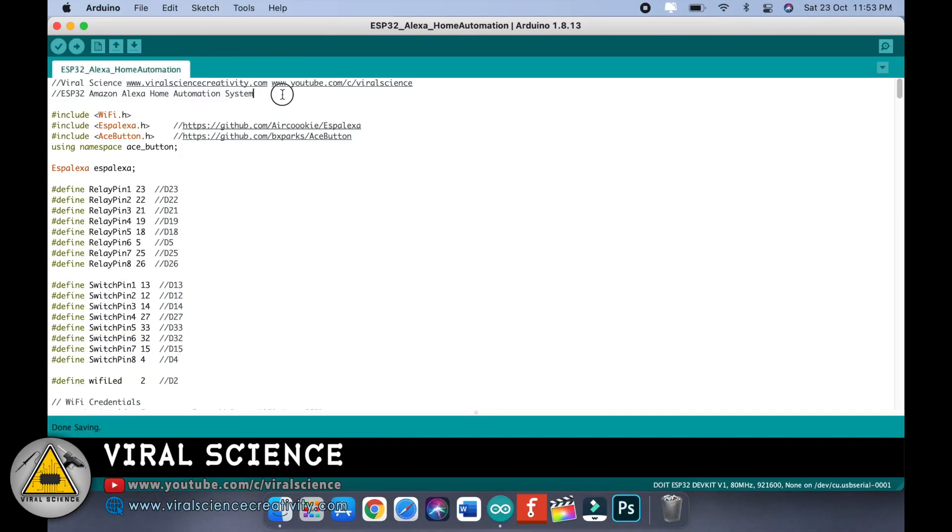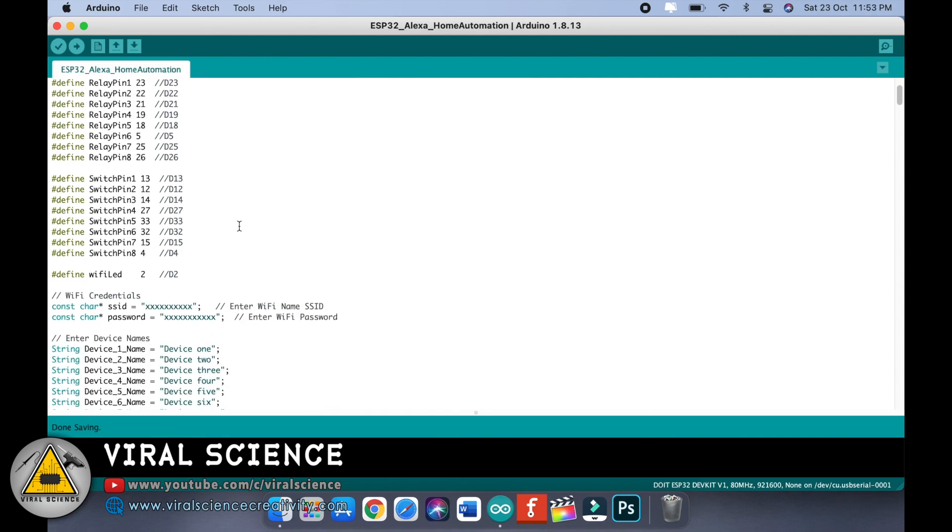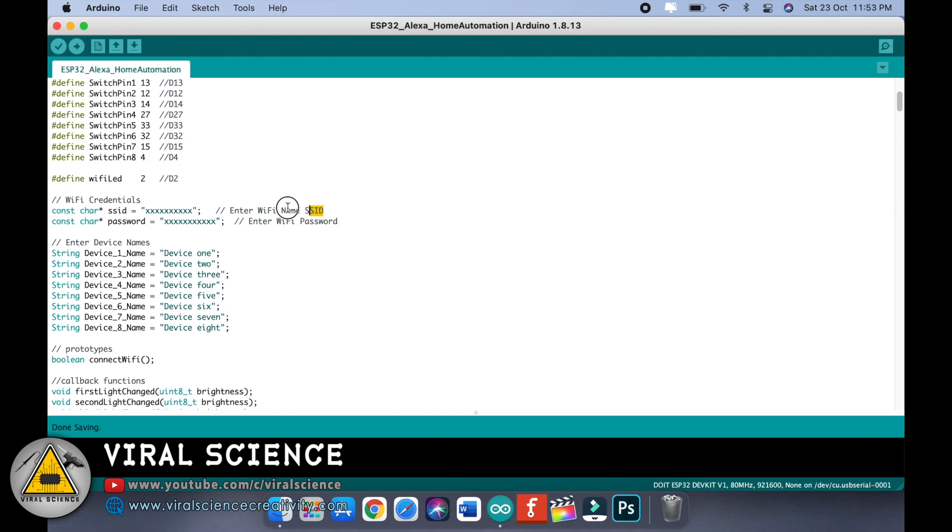So now connect your ESP32 board with your computer and open the code. First download and add these libraries. Then in this section of the code you have to enter the WiFi name. In my case I will enter the WiFi name and then enter the WiFi password. Make sure all your devices are connected to this WiFi network.